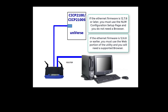To determine which portion of the new utility to use, it all depends on the version of Ethernet firmware in the controller. Very important: if the Ethernet firmware version is 12.6.8 or earlier, you must use the web portion of the utility to update the firmware. If the Ethernet firmware version is 12.7.8 or later, you must use the non-web NLM configuration setup page.